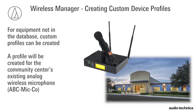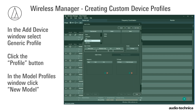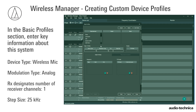For this example, a profile will be created for the facility's existing analog wireless from the ABC Microphone Company. In the Add Device window, select Generic Profile and then Profile. In the Model Profiles window, select New Model. In the Basic Profiles section, enter key information about the system: device type – wireless microphone, modulation type – analog.